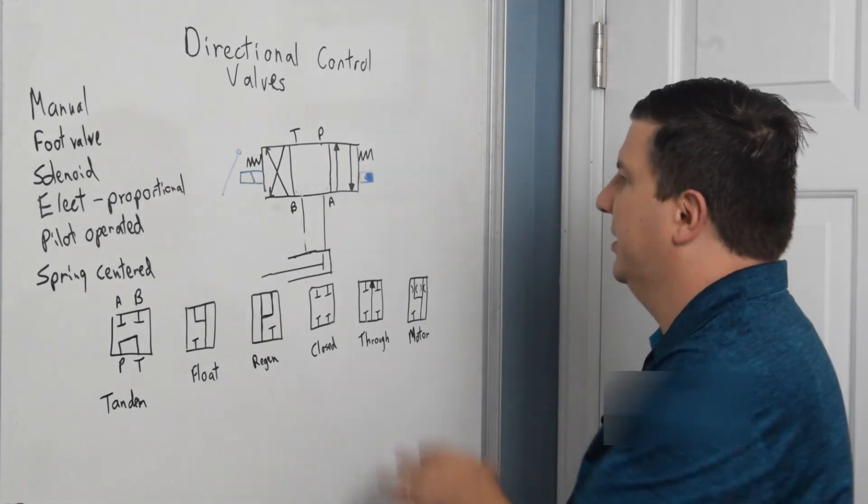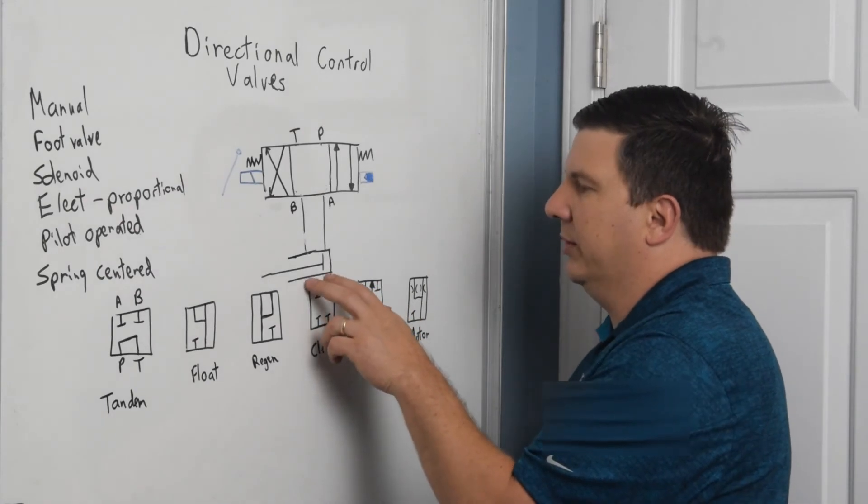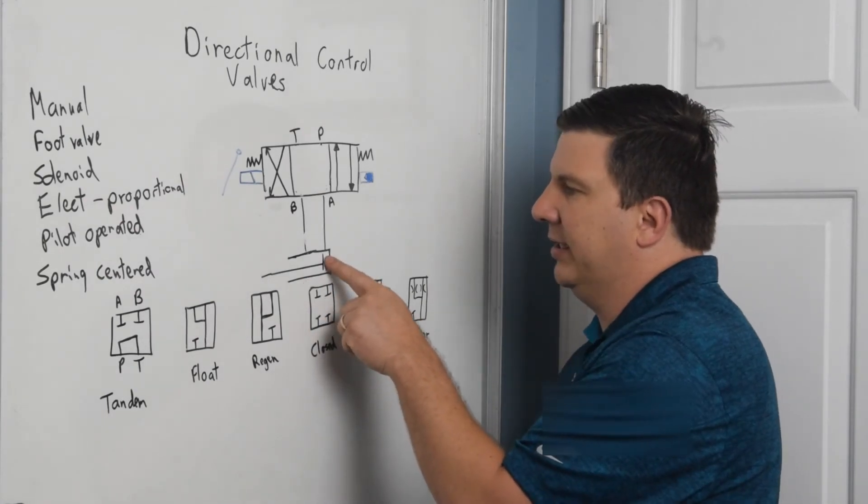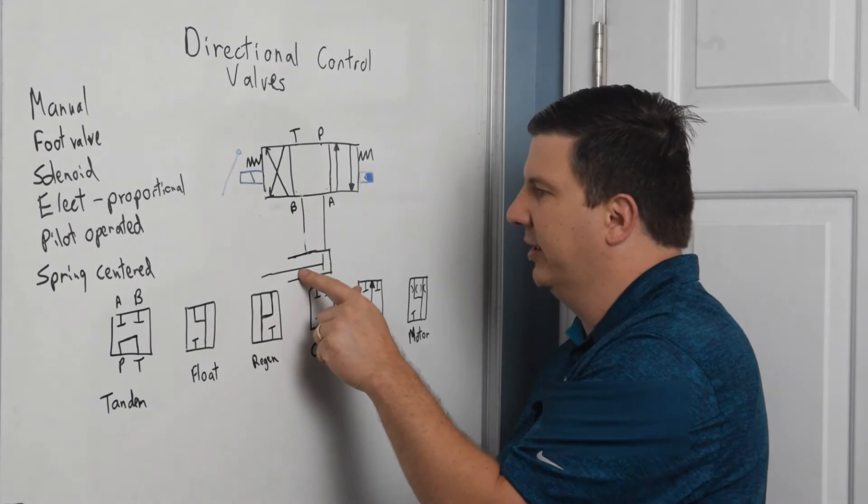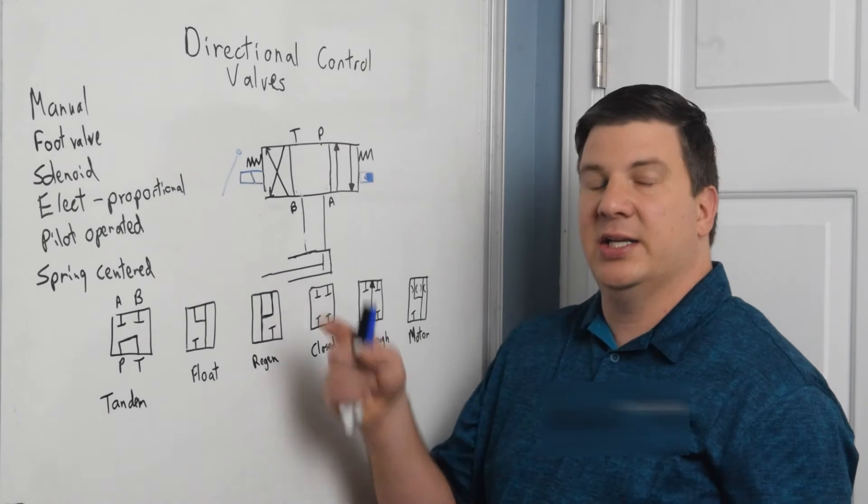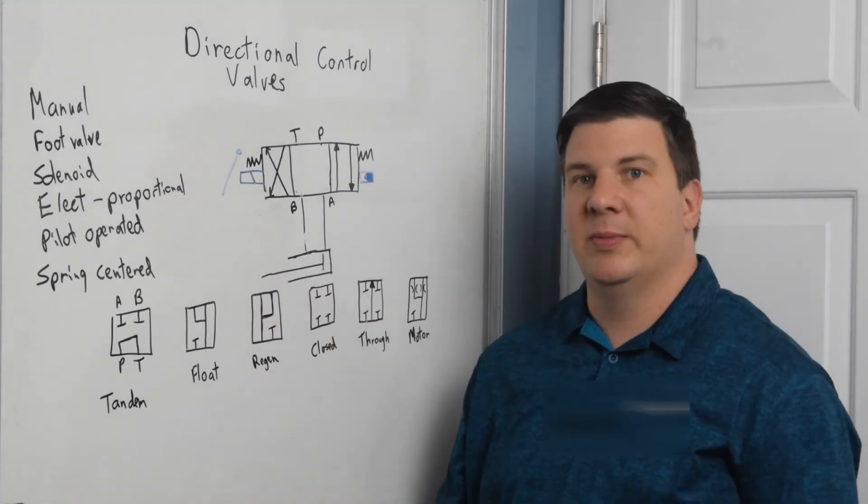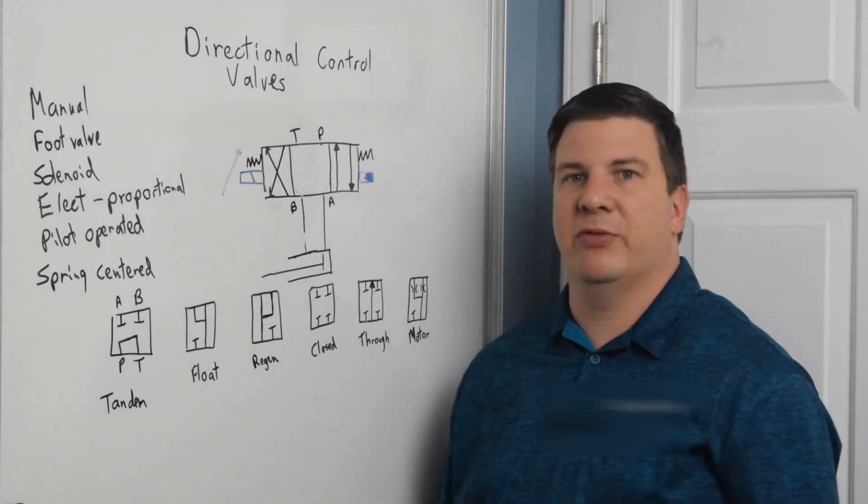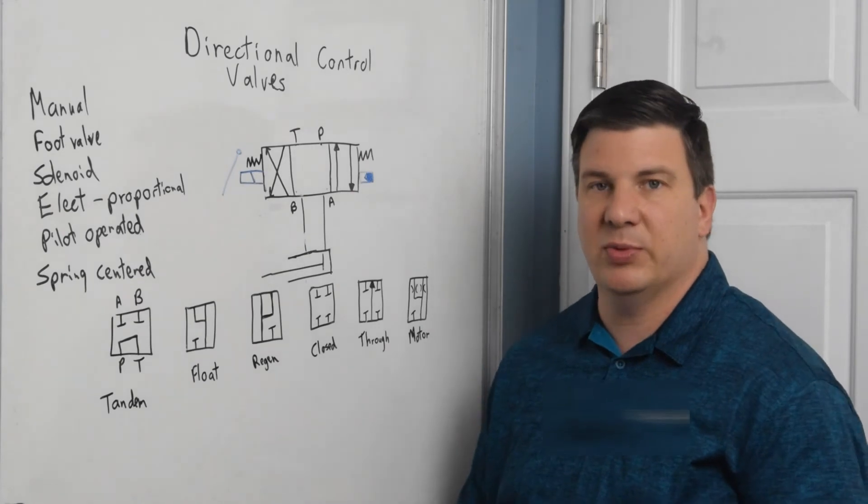But what actually happens is the oil, this side has bigger area than this side. So what will actually happen is the rod will extend very quickly because it only has to move the amount of oil that the rod takes up, which is very small.